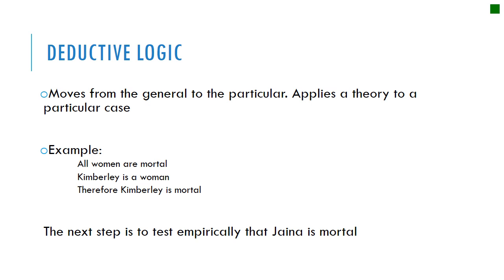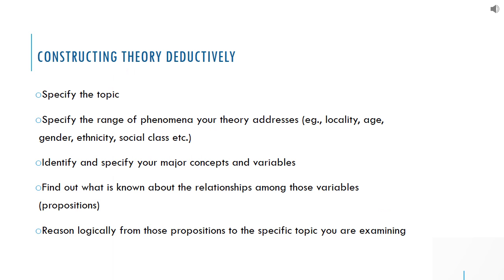The example here is that the general idea is that women are mortal. If I am a woman, therefore I must be mortal. When constructing or analyzing a theory deductively, you give a specific topic, then specify what your theory is trying to address — is it trying to address a specific community, a specific ethnicity, a specific gender? Then you identify what the major concepts are related to the phenomena you're examining and what kinds of relationships exist between those phenomena.